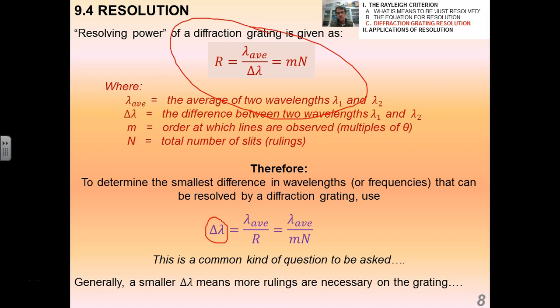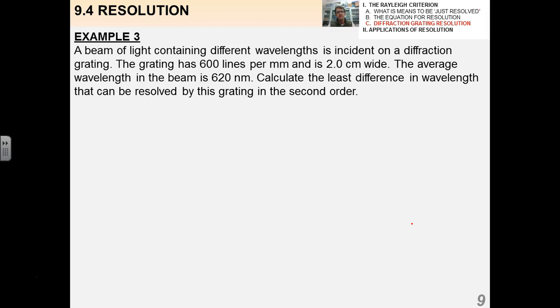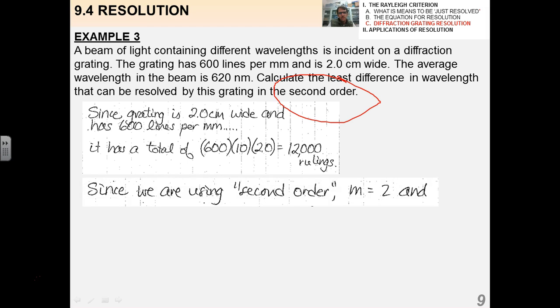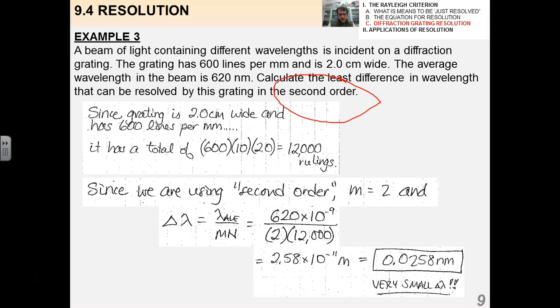Like in this example: a beam of light containing different wavelengths is incident on a diffraction grating, 600 lines per millimeter and two centimeters wide. The average wavelength of the beam is 620 nanometers. Calculate the least difference in wavelength that can possibly be resolved by this grating in the second order. This means that m equals 2. Since the grating is 2 centimeters wide and has 600 lines per millimeter, it has a total of 12,000 rulings or lines. Since we're using second order m equals 2, all I do is solve for delta lambda and I get 0.0258 nanometers. It's very small delta lambda.